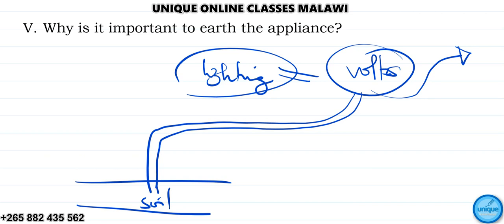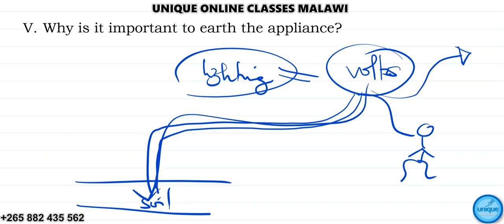The earth wire is for safety, protecting electrical appliances. It prevents electrical shock when an appliance develops a fault. So you can say: it is to prevent electrical shock when the appliance develops some faults.